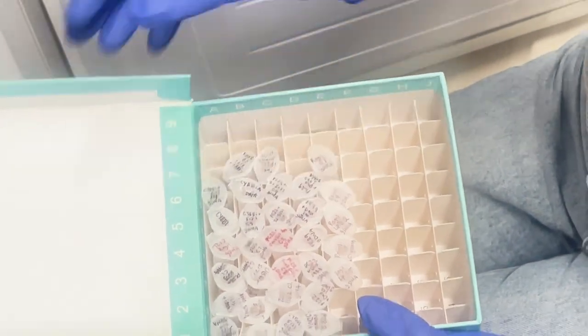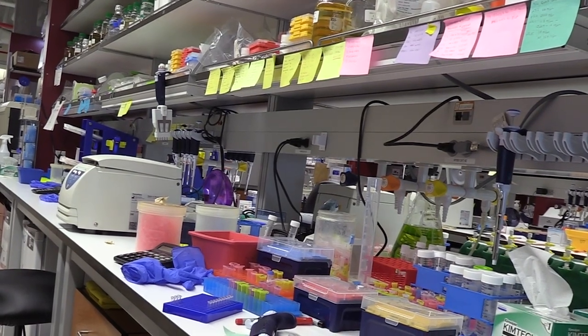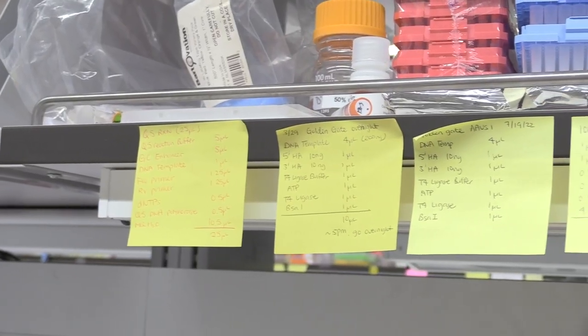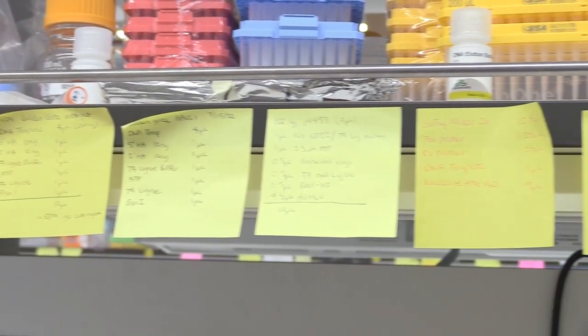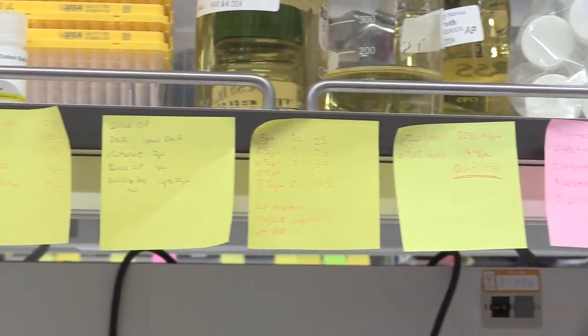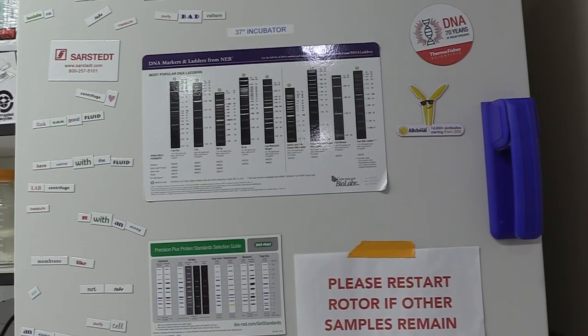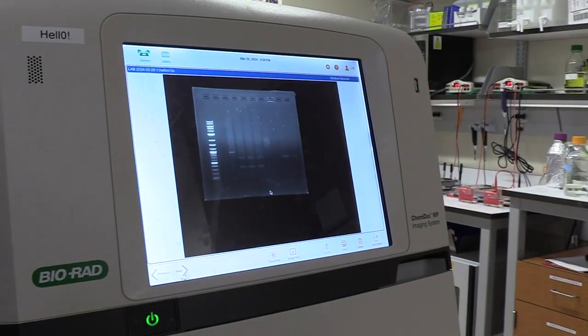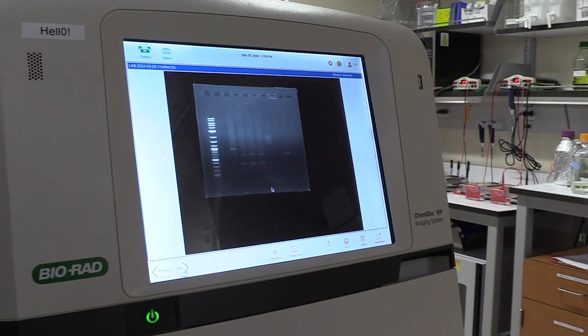Once we have everything together and measure the amount of each of our DNA fragments, then we can assemble that together using yeast assembly. And then we'll have to check that the right assembly was made in the yeast. And then once we can confirm that it was correct using PCR,